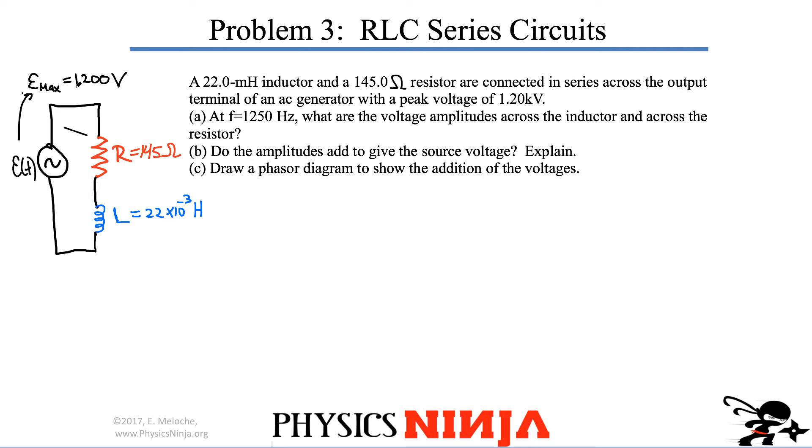Again, it's the same questions, except this time we switch the frequency a little bit. At the frequency equals 1,250 Hz, what are the voltage amplitudes across the inductor and across the resistor?